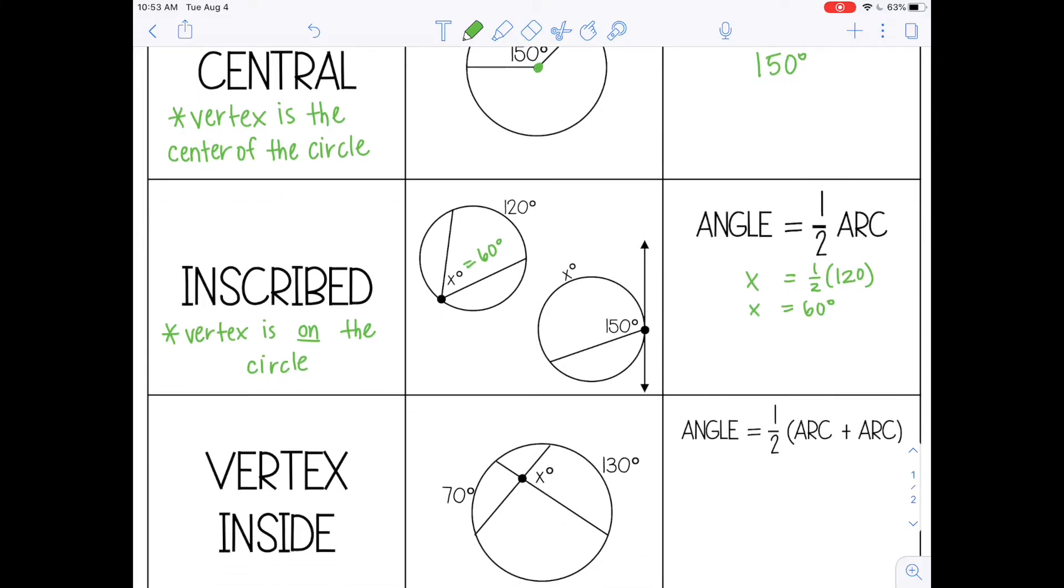And in the second one, same thing, except I have the angle. I'm going to use a different color for this one. I have the angle that's 150. I want to find the arc. So to do that, I can multiply by 2 on both sides, which cancels out the one half, multiplying by the reciprocal. So the arc is 300.